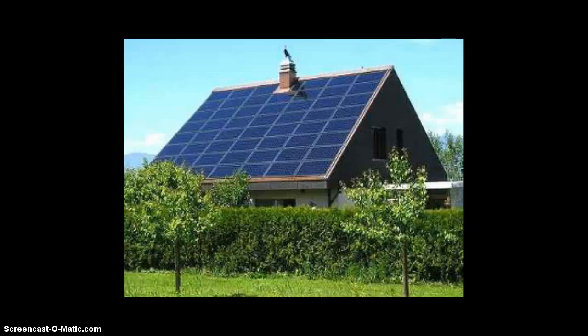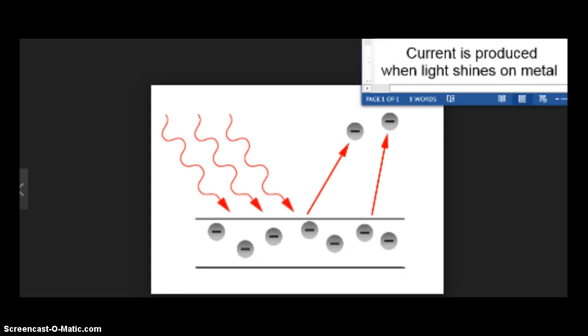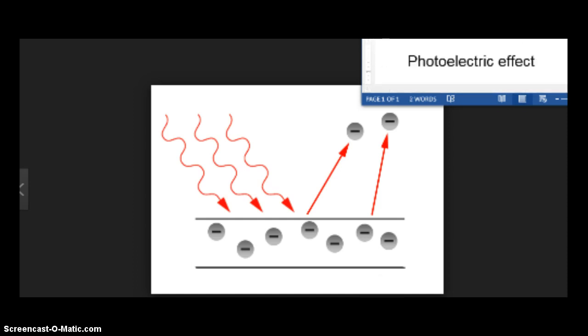Here's the second kind of device that can be used to harness solar energy. Instead of heating up water, we can actually generate electricity straight from the sun. There's a really cool thing that happens when you shine light on a metal surface. The light strikes the metal surface, the photons are absorbed by electrons, and then they go shooting off. In much simpler terms, a current is produced when light shines on a metal, and we call that the photoelectric effect.